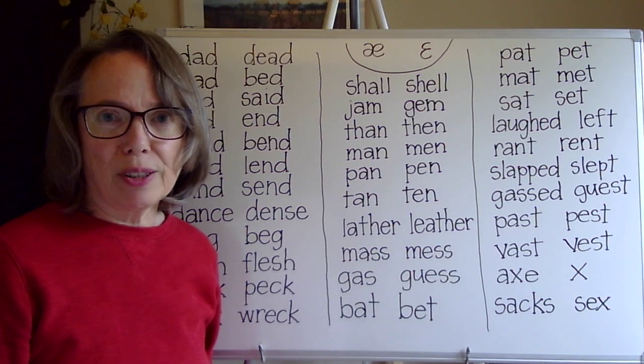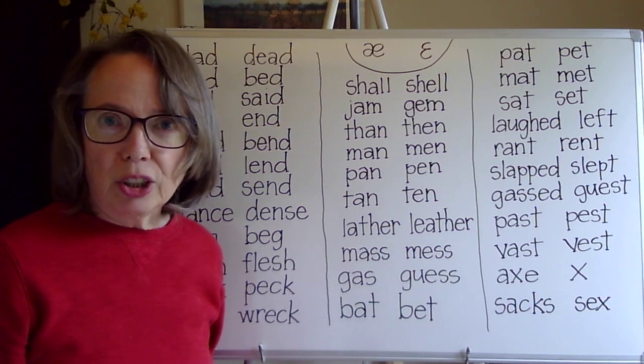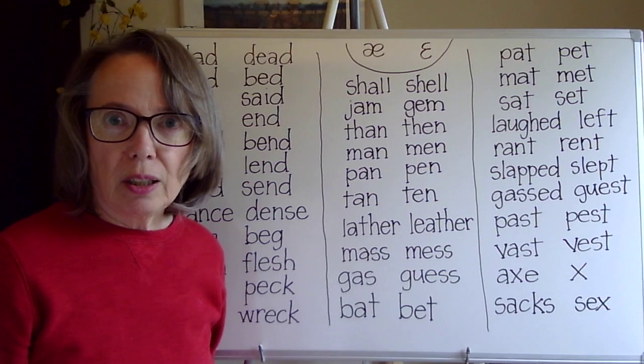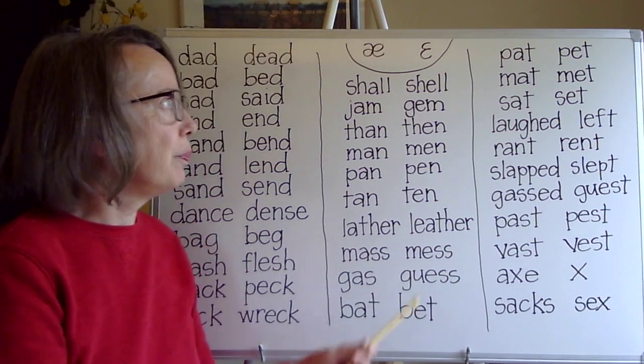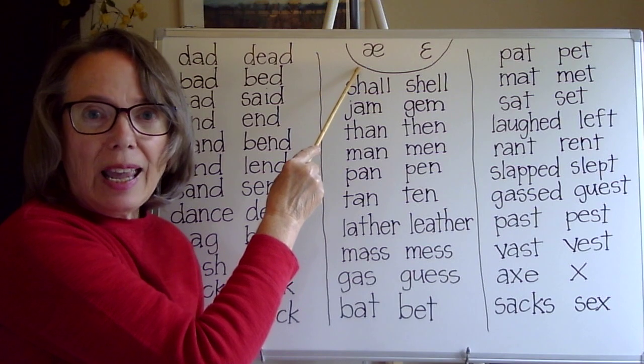Hi viewers. We're going to look at the minimal pair list for the two vowel sounds, ah and eh.